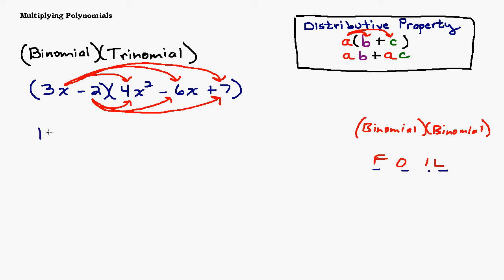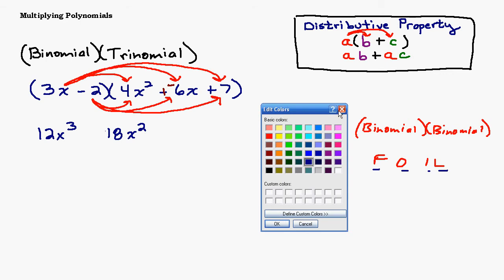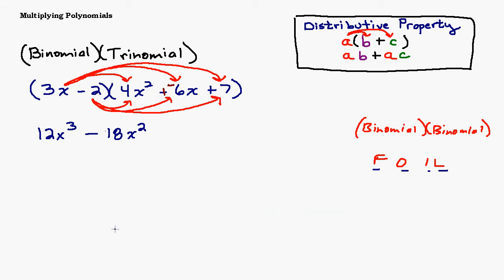So 3x times 4x squared, that's 12x to the third. 3x times negative 6x—some of you might be saying, that's not a negative, that's a minus 6x. But remember, subtracting is the same as adding a negative. So when you see that subtraction sign, you really need to think of it as a negative 6. So a positive times a negative is a negative, so I get negative 18, and x times x is x squared. But I'm not going to write plus a negative 18. When you have adding a negative, it's the exact same thing as subtracting. So we just write subtract. It's a little cleaner, looks a little nicer. Alright, 3x times a positive 7, that's a positive 21x.